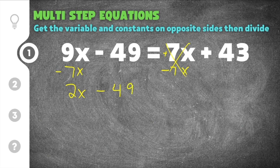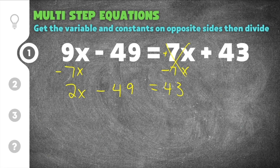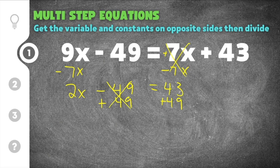So we have 2x, and I bring down the minus 49 and the plus 43 since those didn't change. Now I want the variable on one side and constants on the other. The x is on the left, so I need to get rid of the minus 49. The opposite of minus 49 is plus 49, so I add 49 to both sides — they cancel on the left, and 43 plus 49 is 92 on the right. We have 2x equals 92.